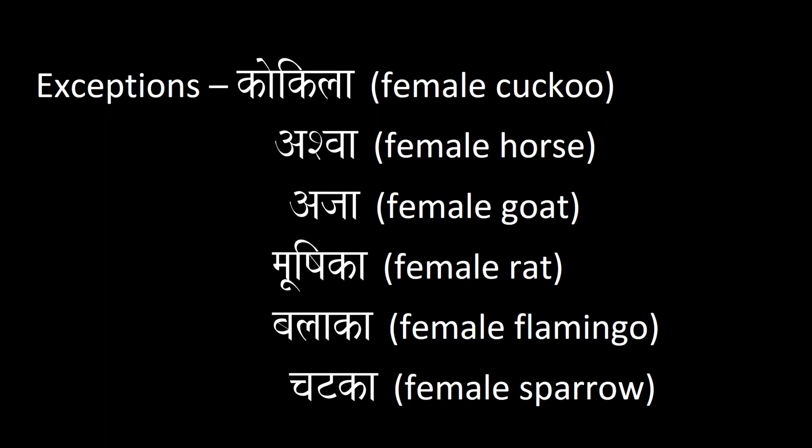Kokila is a male cuckoo but kokilā is a female cuckoo. Aśva is a male horse but aśvā is a female horse. Aja is a male goat but ajā with a long 'ā' is a female goat. Mūṣika is a male rat but mūṣikā is a female rat. Bālaka is a flamingo but bālikā is a female flamingo. Caṭaka is a sparrow but caṭakā is a female sparrow. Those are the exceptions for species.